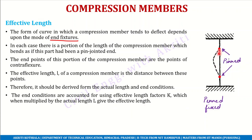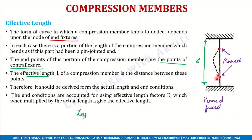We need to determine these points — that is our task. At these points, the member is behaving as a pinned-end fixture. They are called points of contraflexure. Once we determine the points of contraflexure, we can define effective length. The actual length of the member is denoted L, and the effective length is L_eff — the distance between these two points of contraflexure.